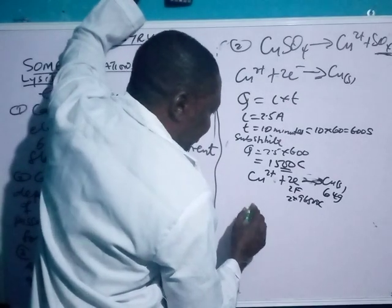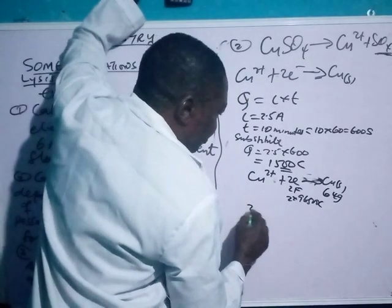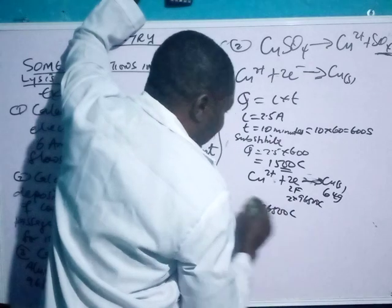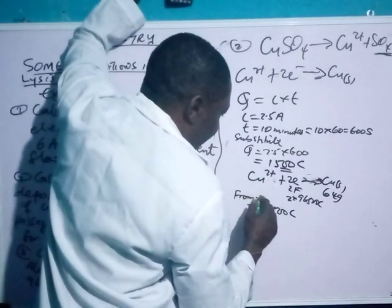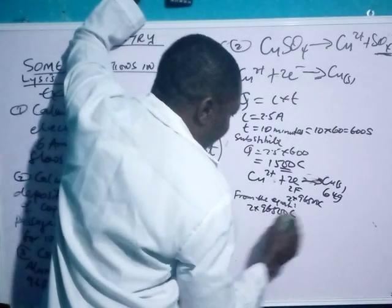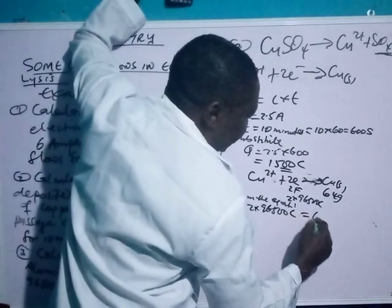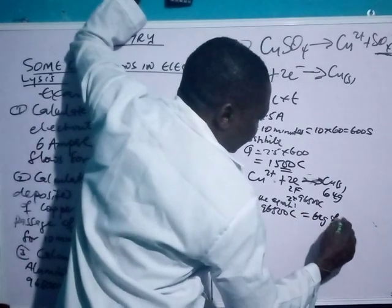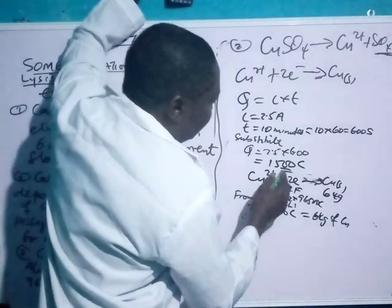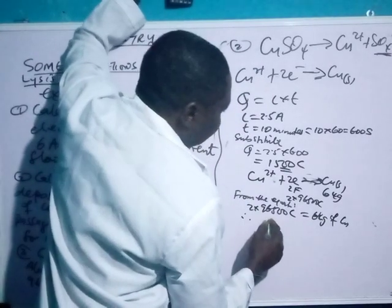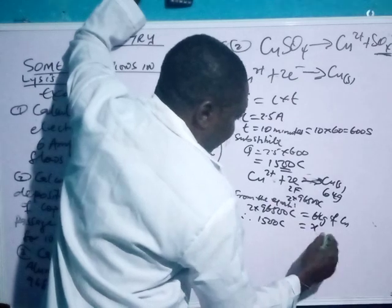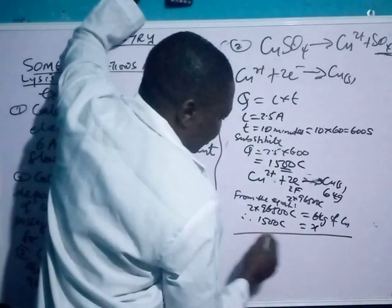So from the equation: 2 × 96,500 Coulombs produces 64 grams of copper. Therefore the 1500 Coulombs we calculated will produce a mass S. Cross-multiplying: S × 2 × 96,500 = 64 × 1500.